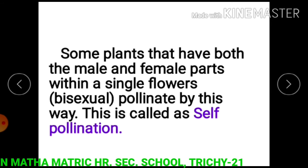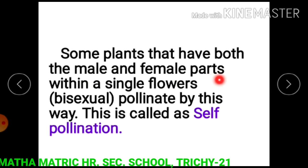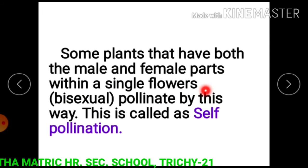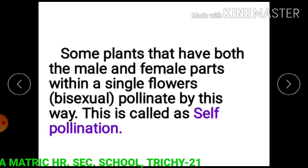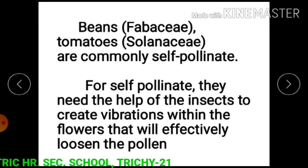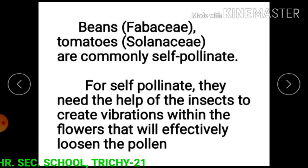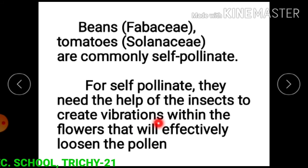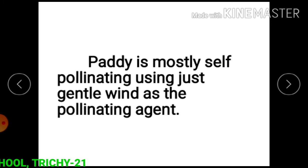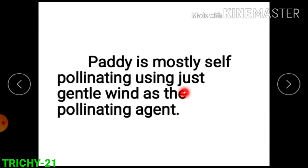Some plants have both the male and female reproductive parts within a single flower — that means bisexual flowers pollinate this way, which is called self pollination. Beans and tomatoes are commonly self-pollinated. They need the help of insects to create vibrations within the flowers, which effectively loosens the pollen grains. Paddy is mostly self-pollinated using gentle wind as the pollinating agent.